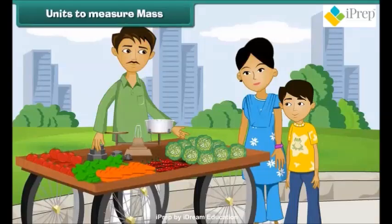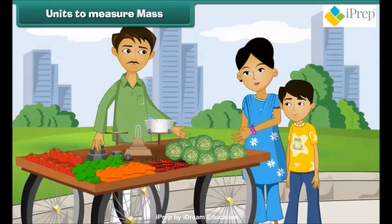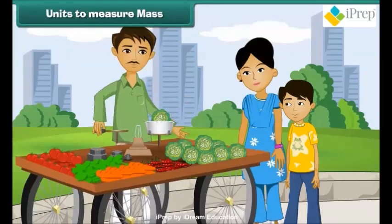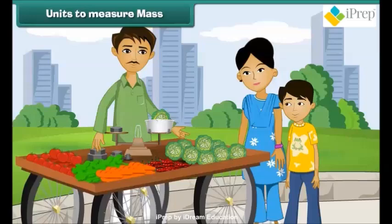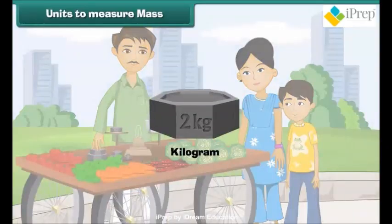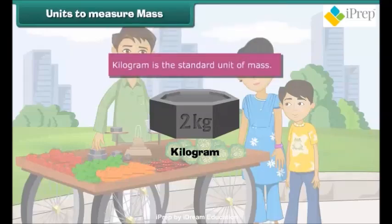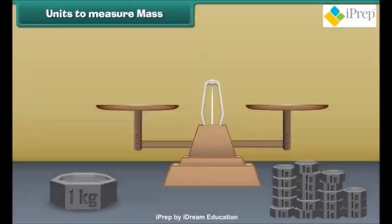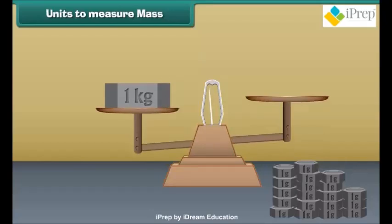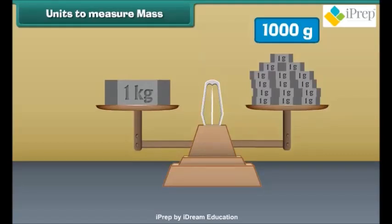You might have gone along with your mother for buying vegetables. You must have heard your mother asking for 1 kilogram cabbage, 5 kilogram potatoes, 100 grams green chili to the vegetable cellar. Kilograms and grams are the two units used for measuring mass of substances, among which kilogram is the standard unit of mass. If 1 kilogram is divided into 1000 parts, then 1 part is called a gram. This means 1 kilogram is equal to 1000 grams.